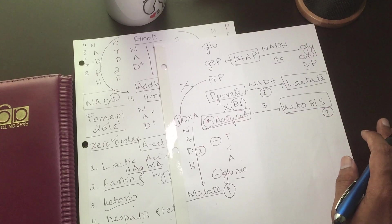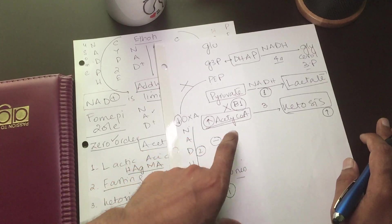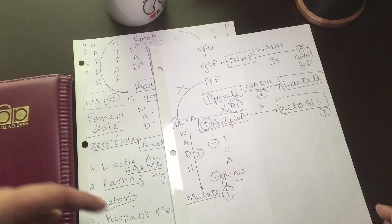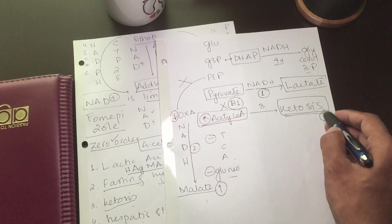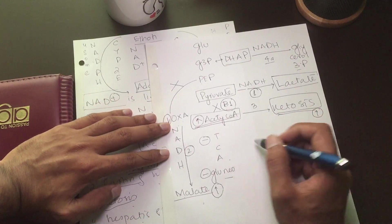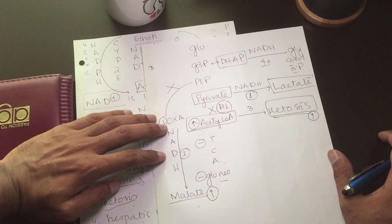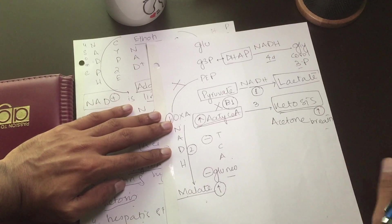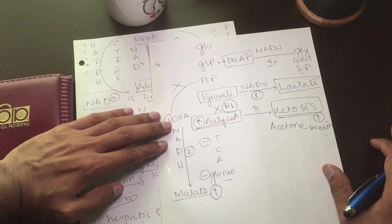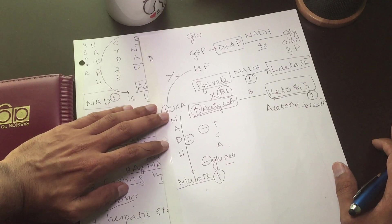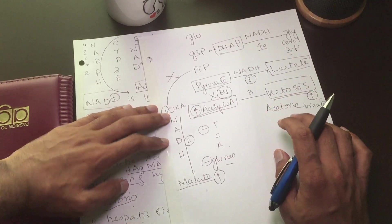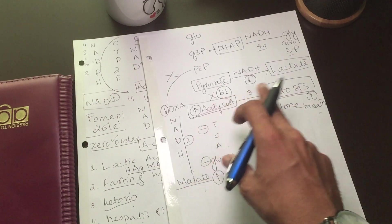Increased acetyl-CoA, not used in the TCA cycle due to hypoglycemia, is diverted to make ketone bodies. There is increased level of beta-hydroxybutyrate, acetoacetate, and acetone. The acetone breath can be detected by others. This is the basis of ketoacidosis or ketosis as the third major effect of alcohol.